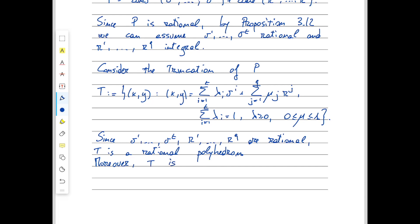Moreover, T is bounded. Why? Look at the points (x,y) in T: all multipliers are bounded between 0 and 1, because mu is explicitly between 0 and 1, and lambda is greater than or equal to 0 and upper bounded by 1 because the sum of the lambda_i's equals 1. So these are bounded combinations of finitely many vectors, so they must be bounded as well. You should figure out a formally correct proof.